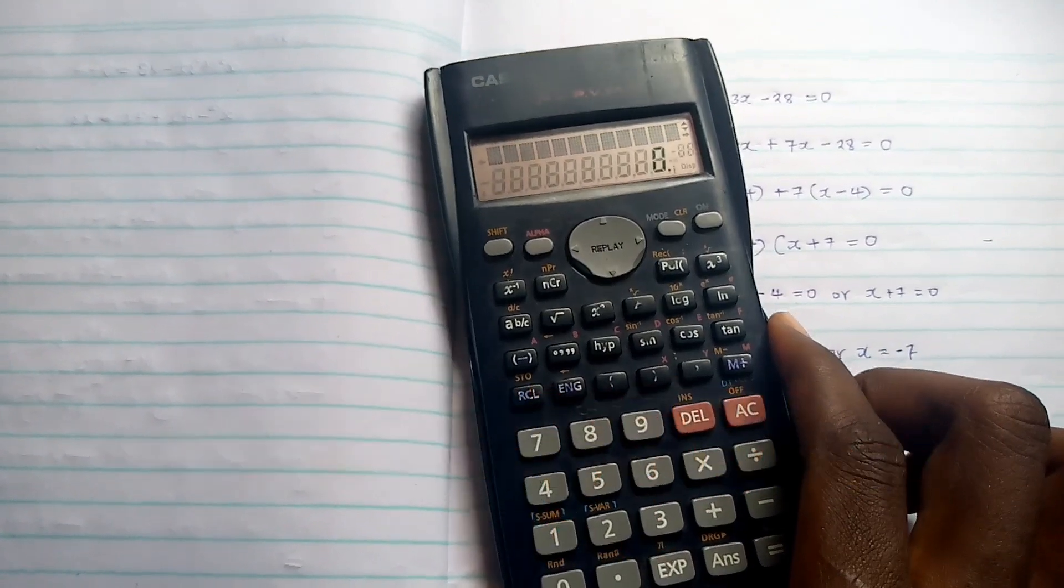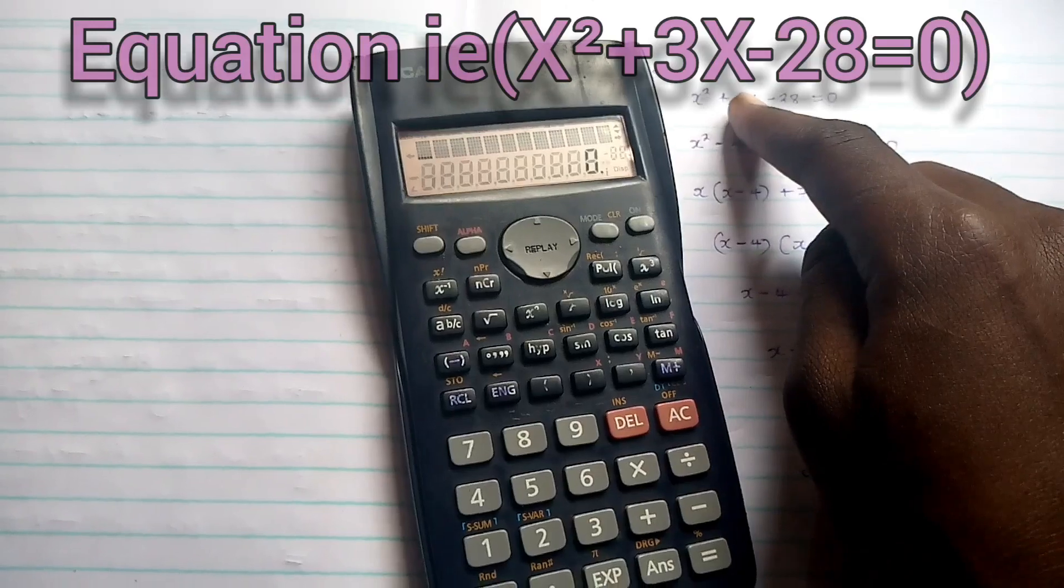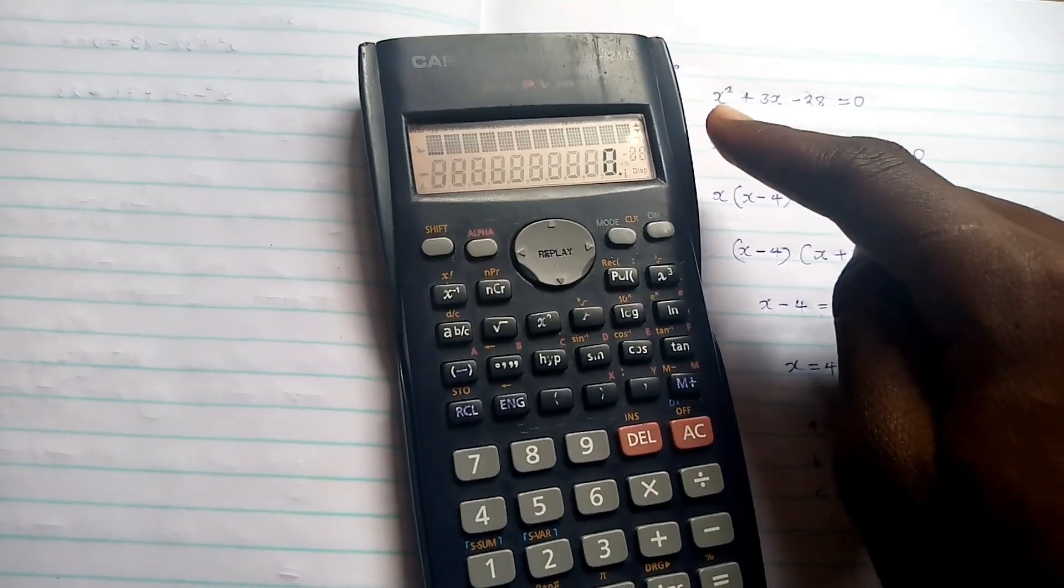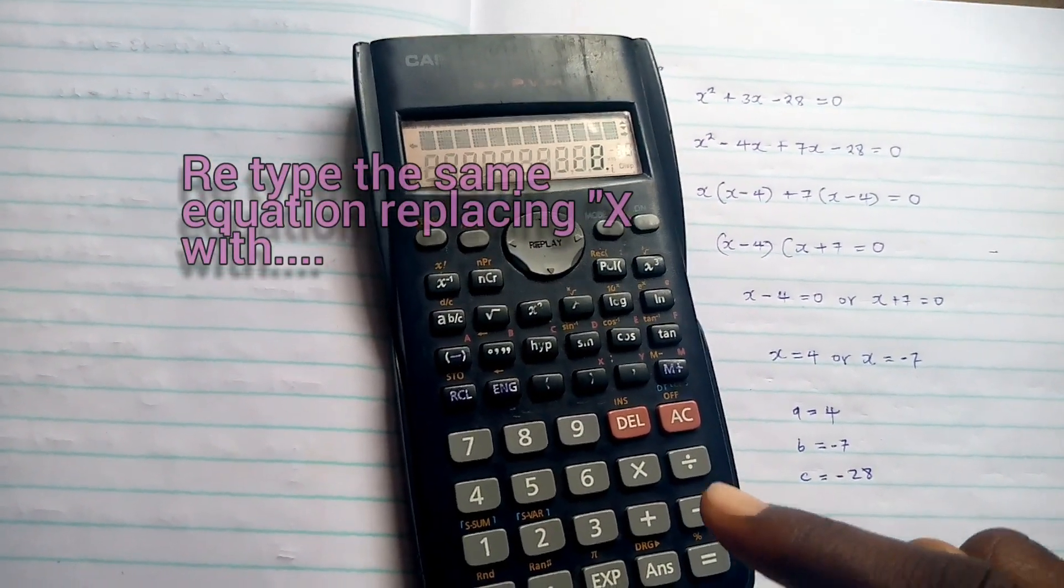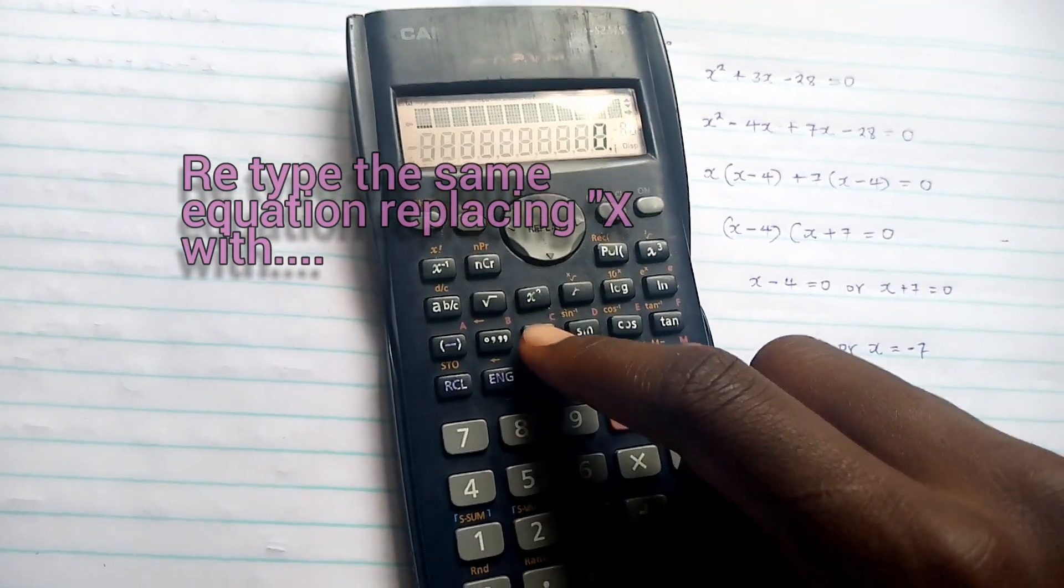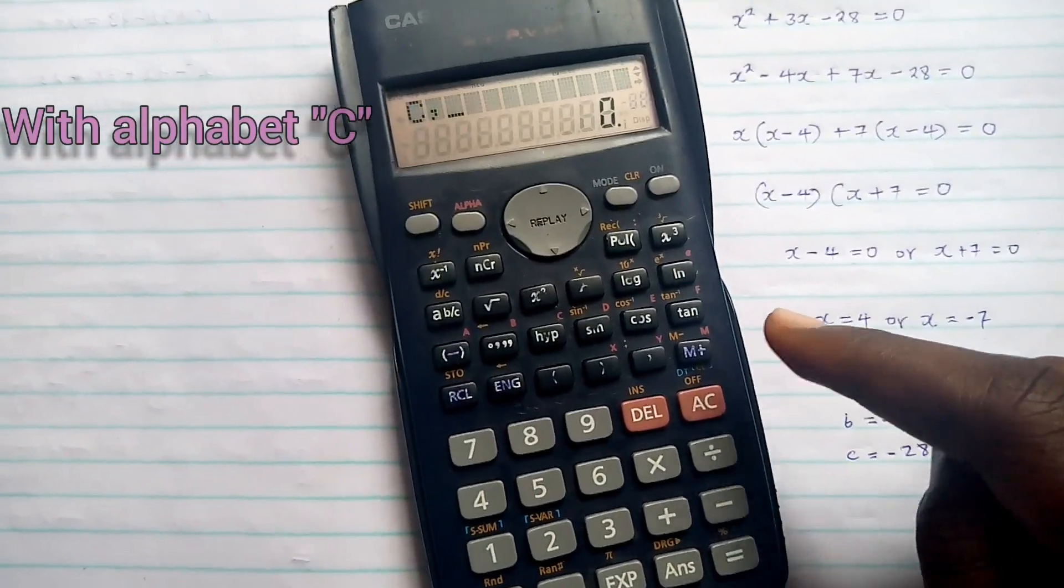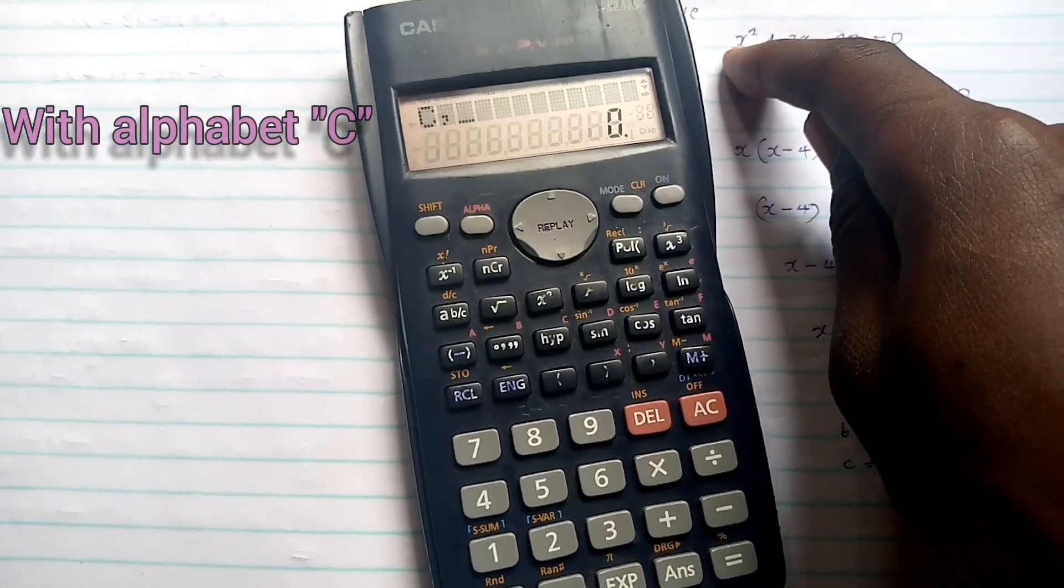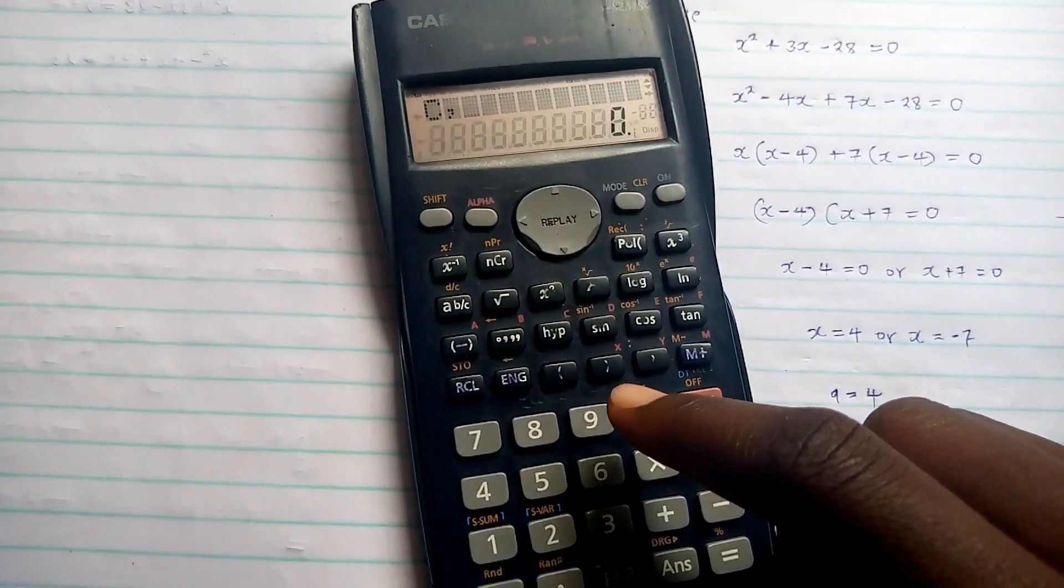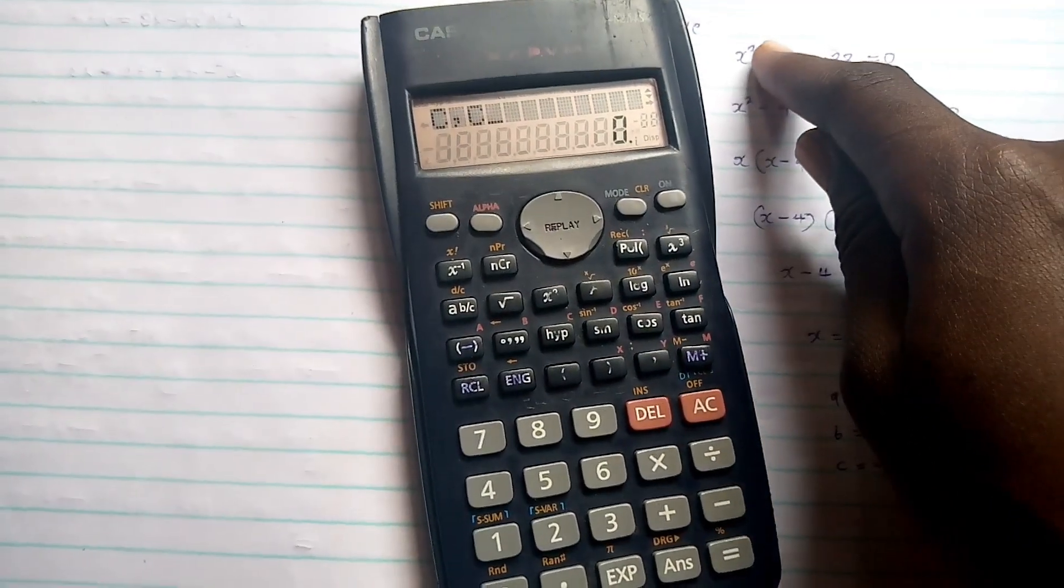Now, we'll begin by typing the equation, which is x squared plus 3x minus 28 equals 0. We'll retype the equation replacing x with alphabet C and start by pressing Alpha followed by C, then comma. Now we'll replace x with alphabet C, then square.